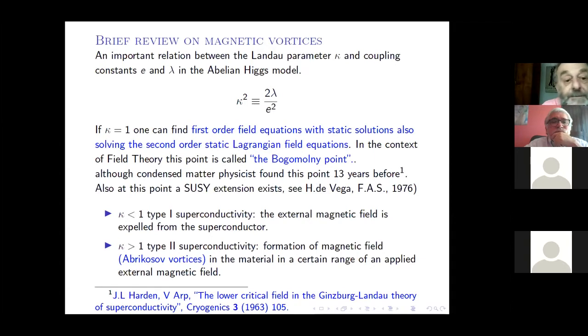An important thing about this theory, important from the point of view of field theory and also condensed matter, is that there is a relation between parameters. On the right hand side, the parameters in the Abelian-Higgs model, on the left hand side something that I call kappa squared. If kappa is equal to one, one can find first order field equations with the static solution also solving the second order Lagrangian equation. In the context of field theory, this point is called the Bogomolny point.